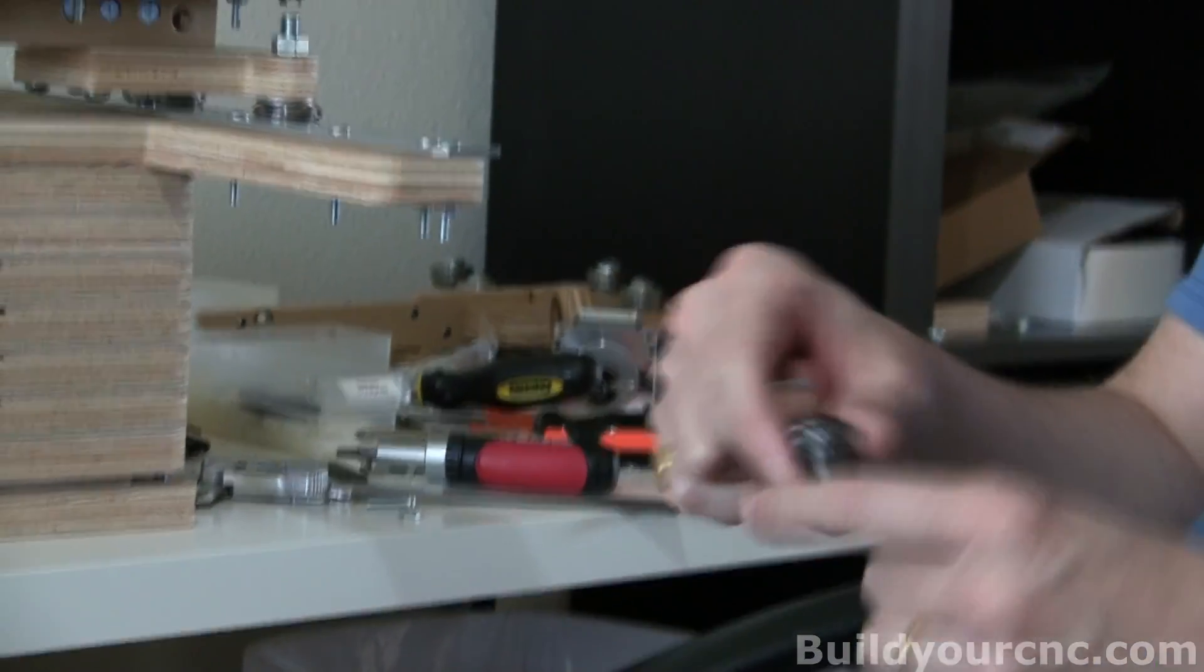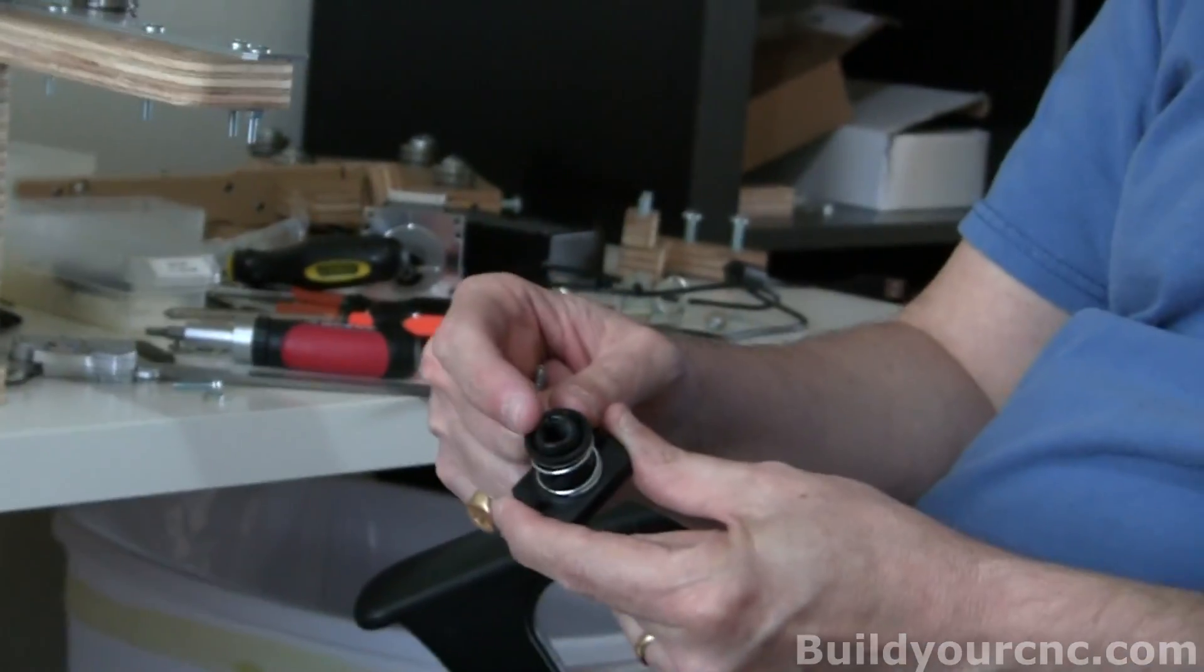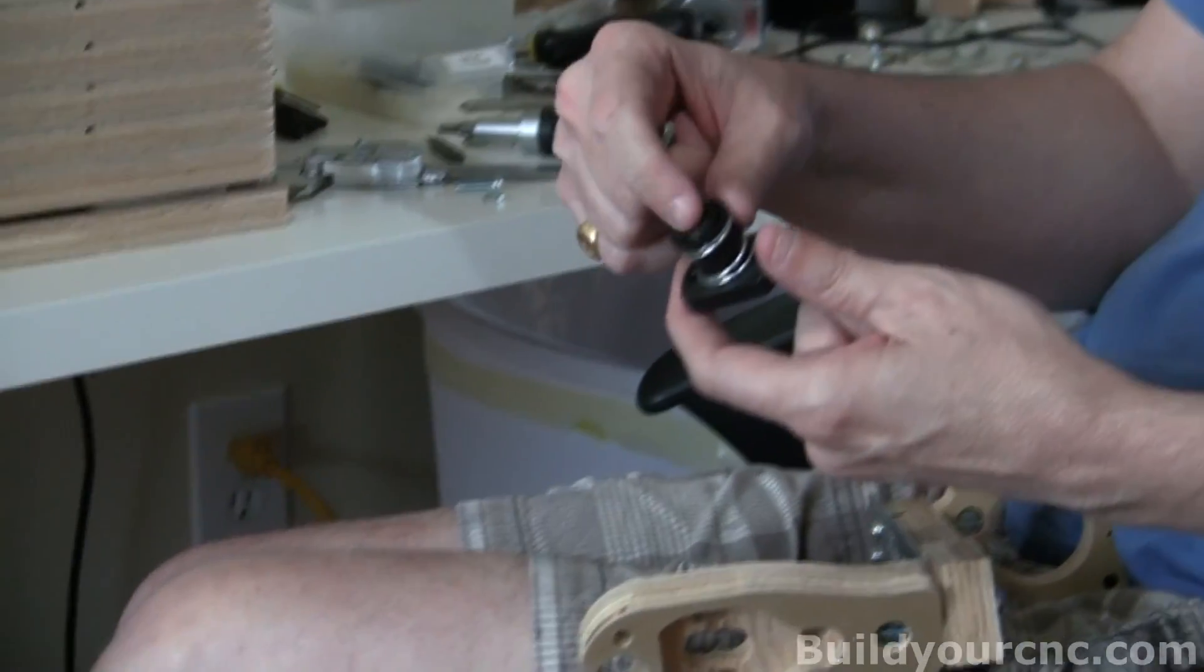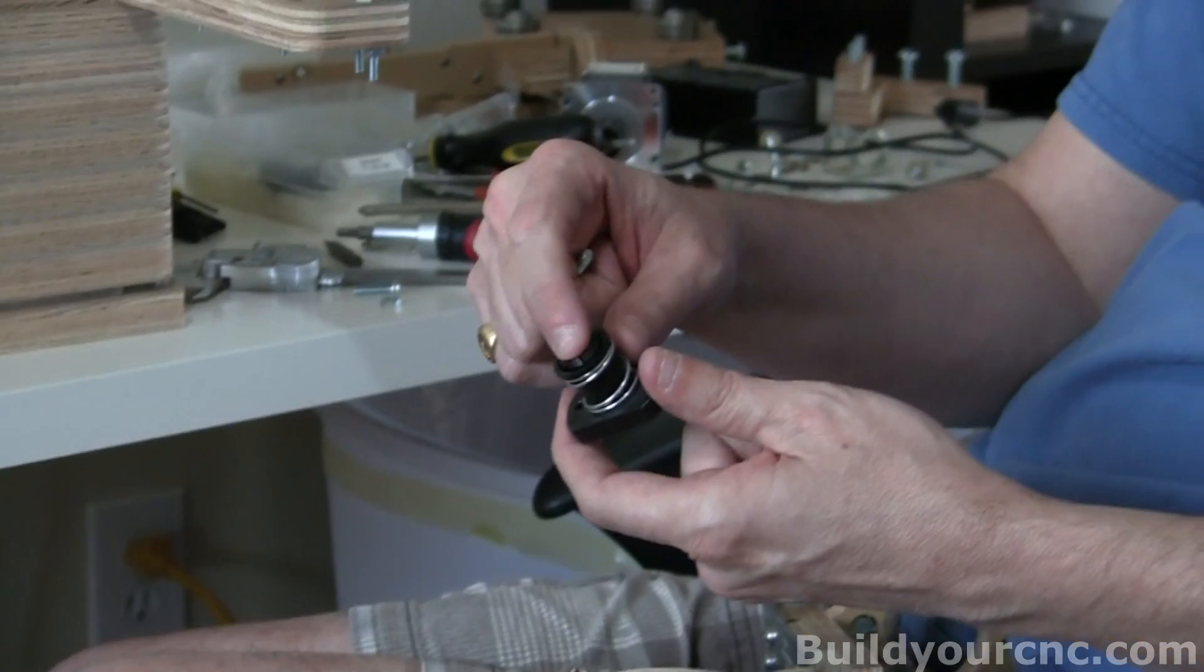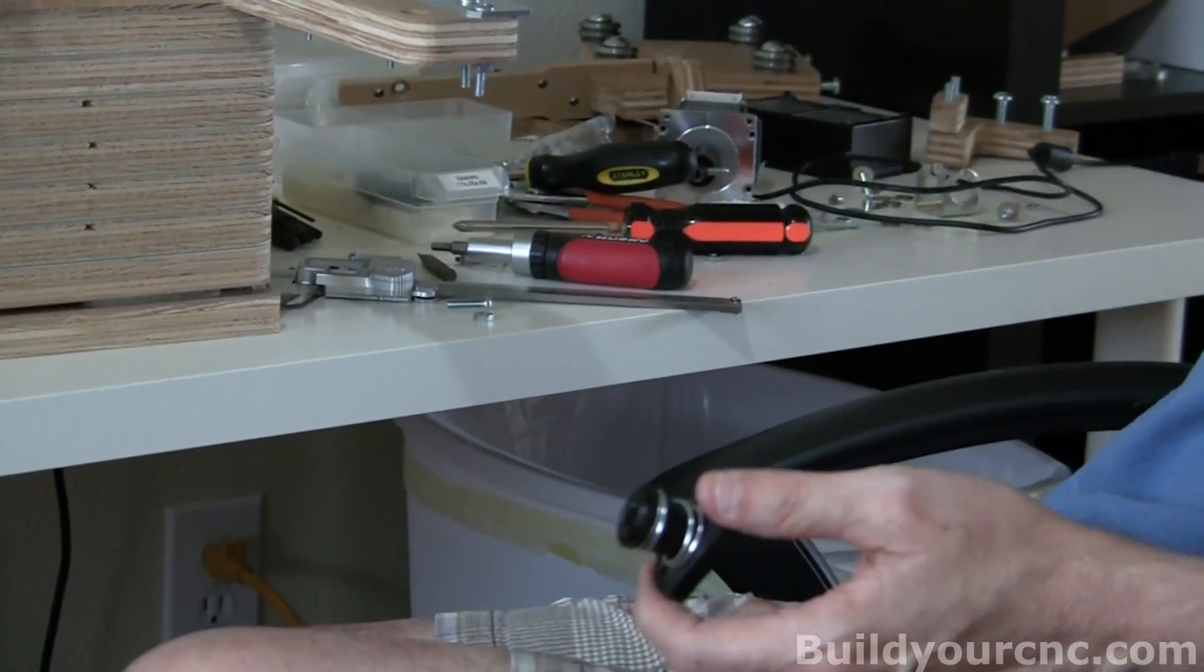Now we're ready to put on the anti-backlash nut. The anti-backlash nut is just a nut that has a cut in the general shaft of the nut. And this will slide up and down to compress the actual threading of the nut. So it holds tightly around the lead screw.